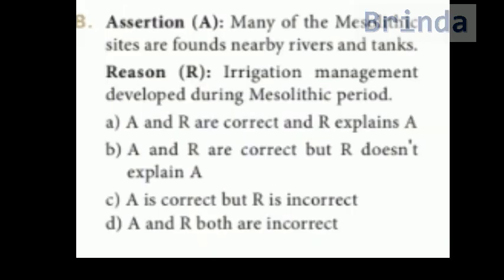Eighth question — Assertion and Reason. Assertion: many of the Mesolithic sites are found nearby rivers and tanks. Reason: irrigation management developed during the Mesolithic period. Options: A — assertion and reason are correct and reason explains assertion; B — assertion and reason are correct but reason doesn't explain assertion; C — assertion is correct but reason is incorrect; D — assertion and reason both are incorrect. The answer is D — assertion and reason both are incorrect.